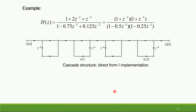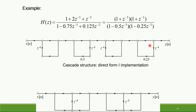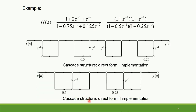Looking at the example, the given transfer function is factorized for the numerator polynomial and the denominator polynomial. In the Direct Form 1 implementation within the cascade structure, each factorized form represents a first order system, whereas in the cascade structure using Direct Form 2 implementation, it requires fewer delay elements. Preferably, it is suggested to make use of second order subsections as compared to first order subsections.